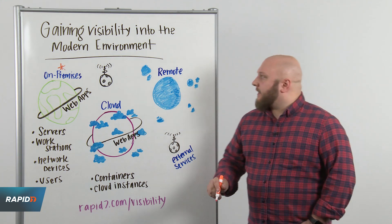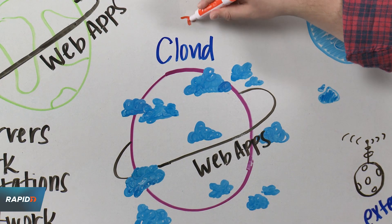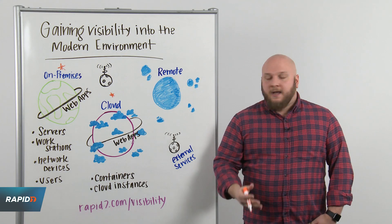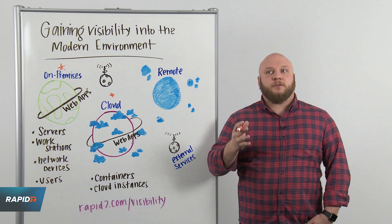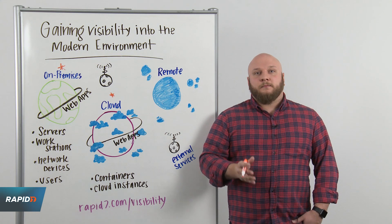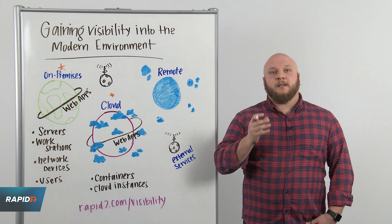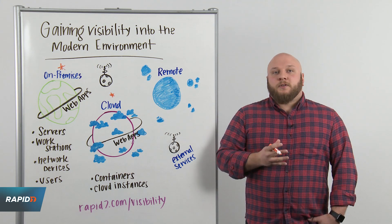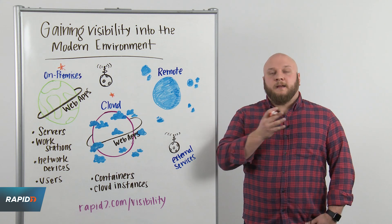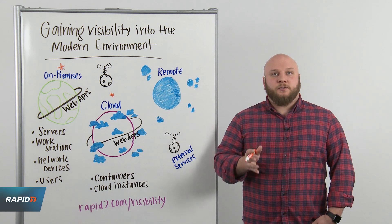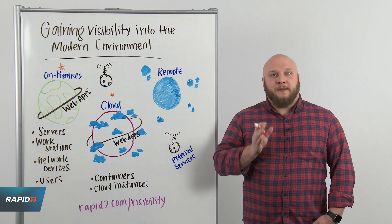The next stop in our journey is the cloud — I'm going to put a nice little happy star right there. The cloud is where the complexity really starts to come in; this is what changed IT for us. We need to worry about the infrastructure-as-a-service provider we're using — Azure, AWS, Google Cloud Compute — and integrate with these providers directly so they can tell us when new instances are spun up and when they're terminated. For the first time, we also have to concern ourselves with the configuration layer in these environments and make sure those configurations align with best practice benchmarks.